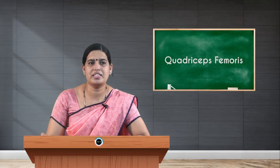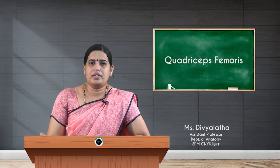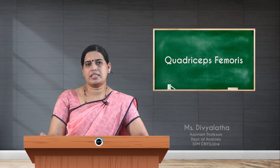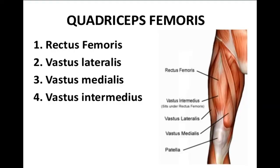Welcome to the session. Today I am going to present the topic of quadriceps femoris. Quadriceps femoris is the bulkiest muscle seen in the anterior compartment of the thigh. The name itself indicates quadriceps — it has four muscle fibers that collectively are called quadriceps femoris. Those four muscles are rectus femoris and the three vasti muscles.